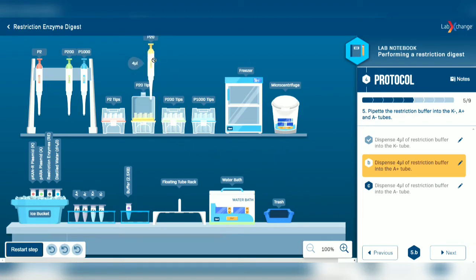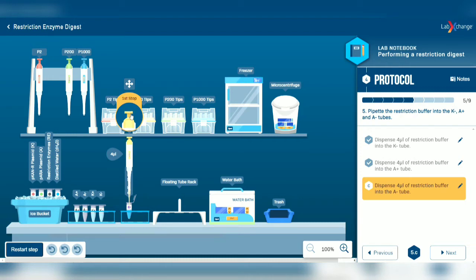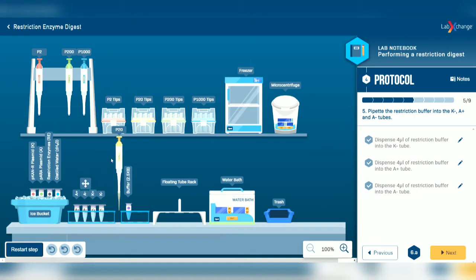Now select a new tip and transfer 4 microliters of restriction buffer to the A-minus tube. Eject the tip to the trash container.